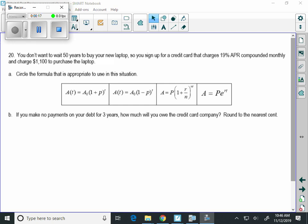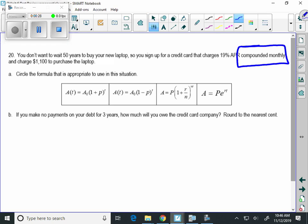So you sign up for a credit card that charges 19% APR compounded monthly. The first thing that I want to point out here is that these are the most important words when it comes to identifying which formula to use.